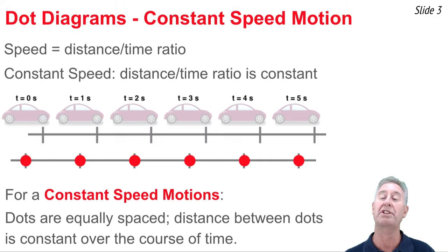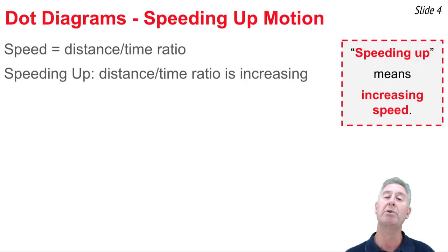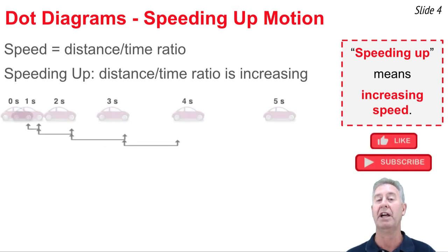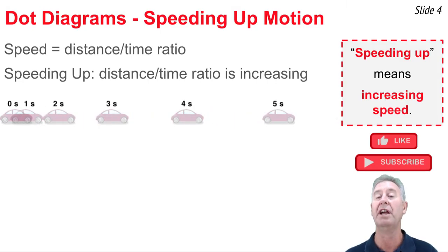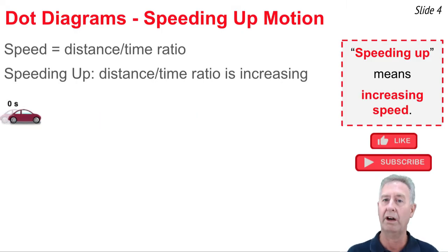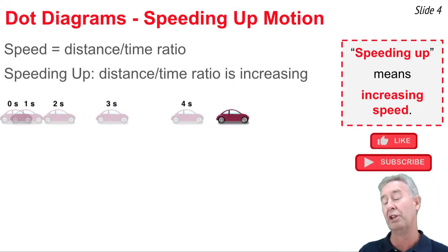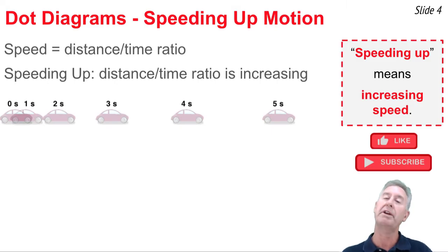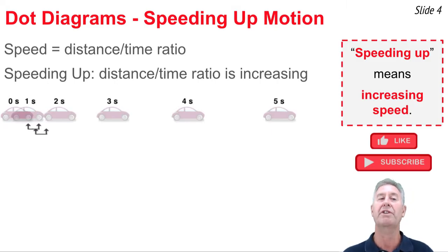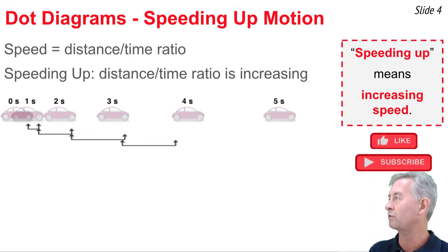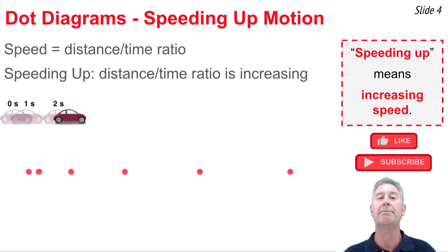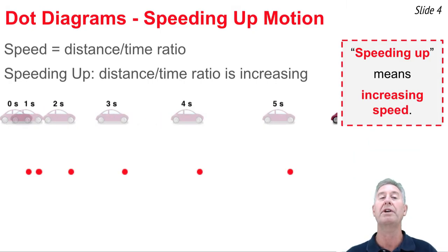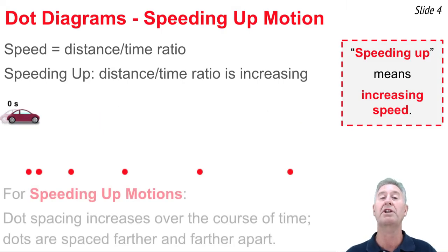Now we're going to contrast that with a speeding up motion. If an object is speeding up, it increases the distance traveled in each consecutive second. We see a car traveling to the right, and because it's speeding up, each consecutive second it travels a further distance than the second before. The distance from front tire at zero seconds to one second to two seconds and so forth is increasing. This is an object moving to the right with increasing speed, and the dot spacing is increasing over the course of time.